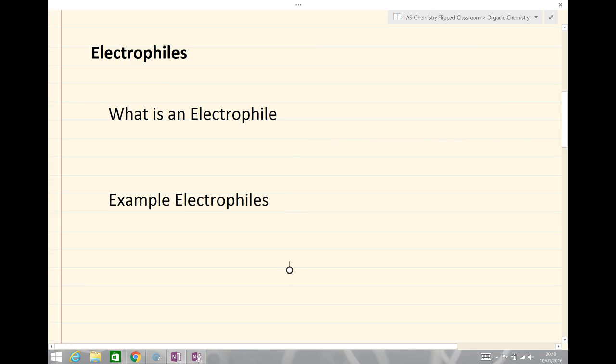Looking at electrophilic addition, the first thing to consider is what is an electrophile. An electrophile is something which accepts a lone pair of electrons, so electron pair acceptors. So the opposite almost of the nucleophile. They tend to have a lack in electron density, so in the case that we'll be seeing will tend to be delta positive and want to react with things which have got lots of electrons, and those things with lots of electrons are of course alkenes.